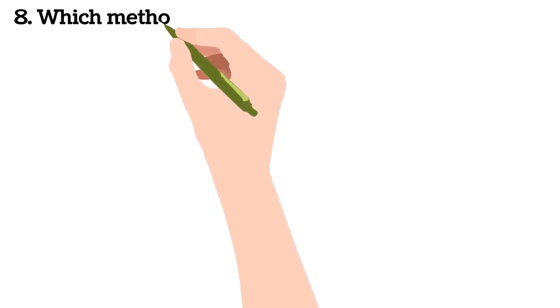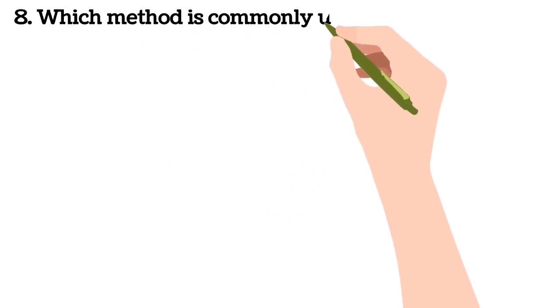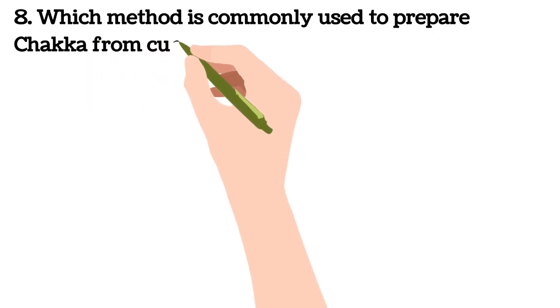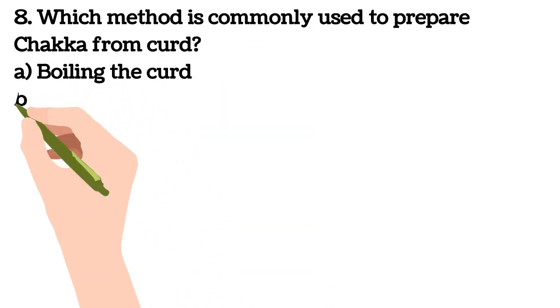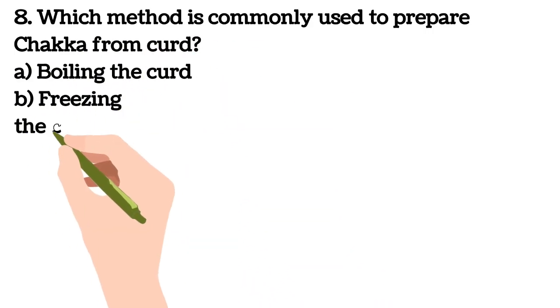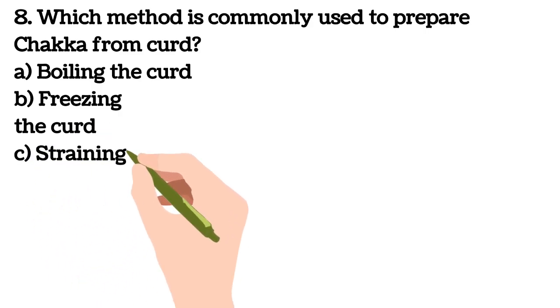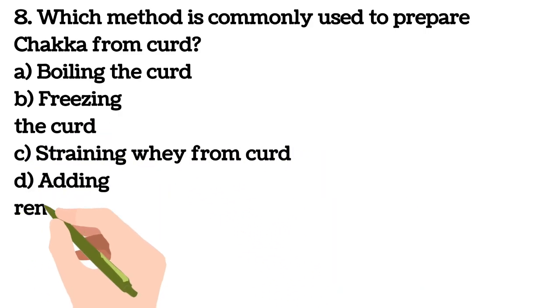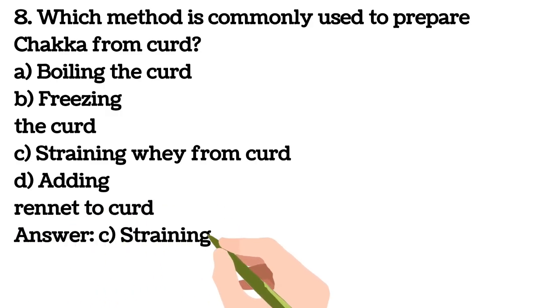Eighth question: which method is commonly used to prepare chakka from curd? A) Boiling the curd, B) Freezing the curd, C) Straining whey from curd, D) Adding rennet to curd. Your answer is C, straining whey from curd.